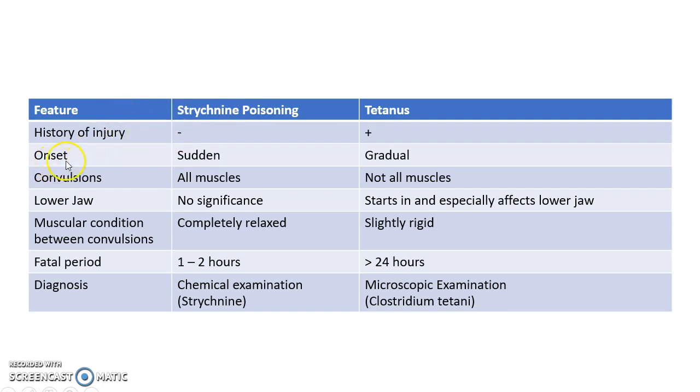Coming to the onset of symptoms, in Strychnine poisoning the onset of symptoms will be sudden, whereas in tetanus the onset of symptoms will be gradual.